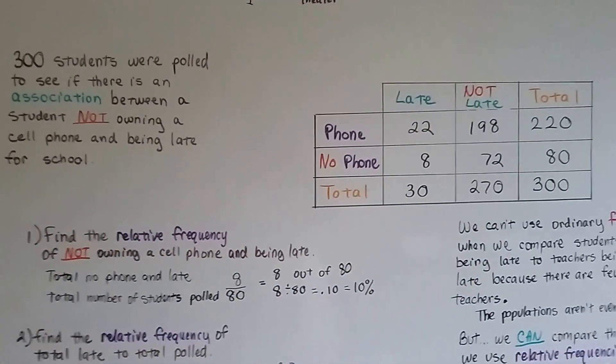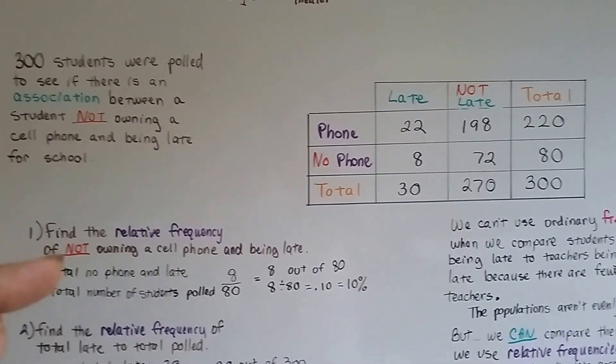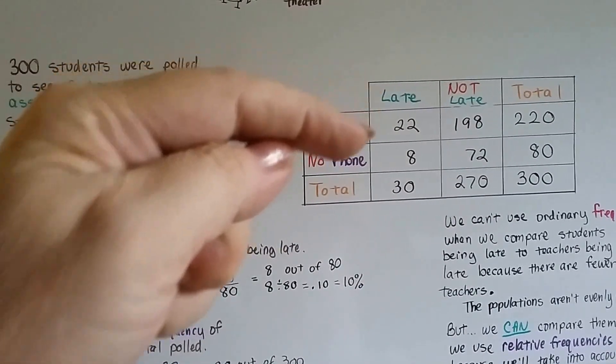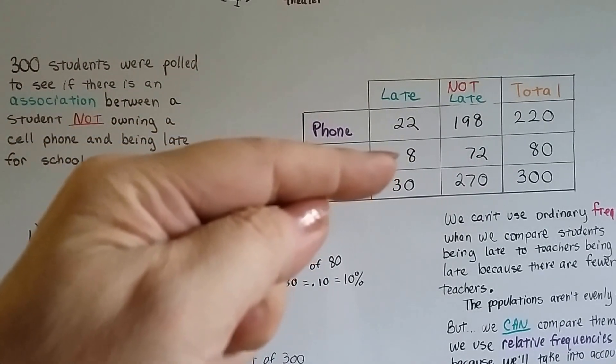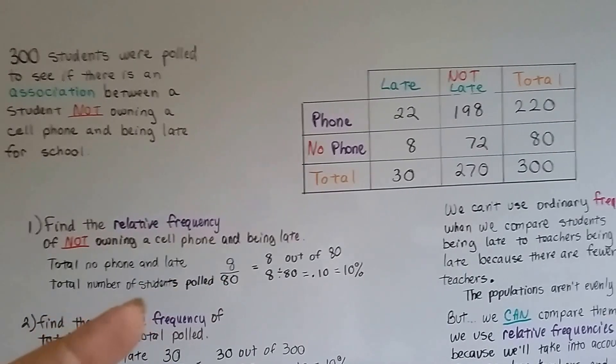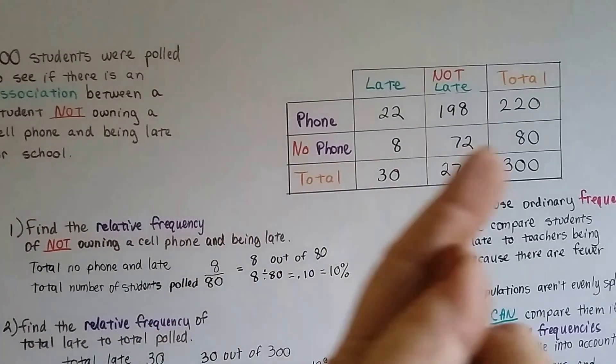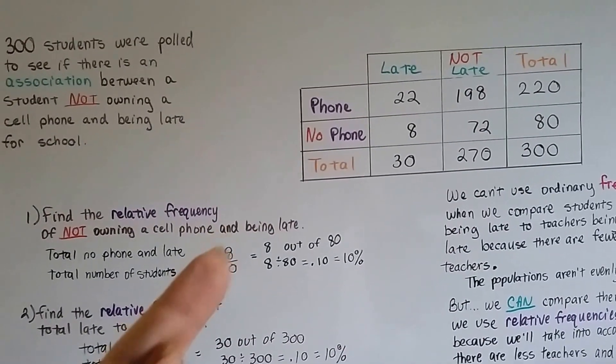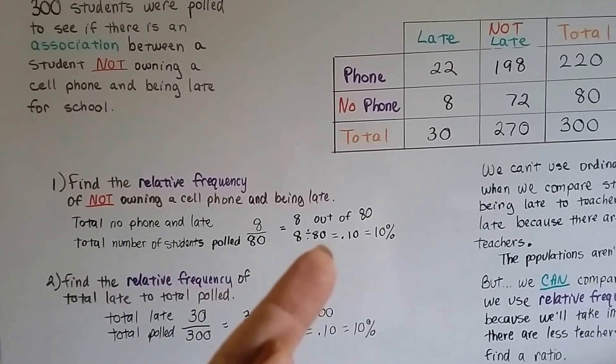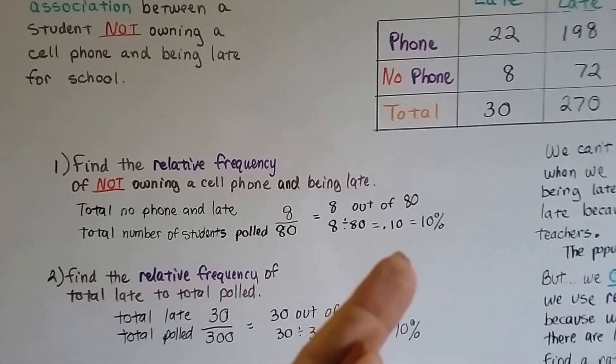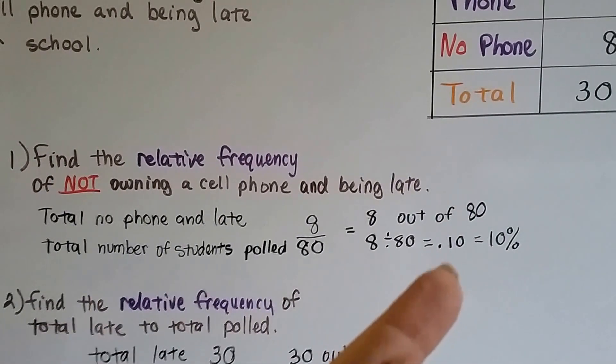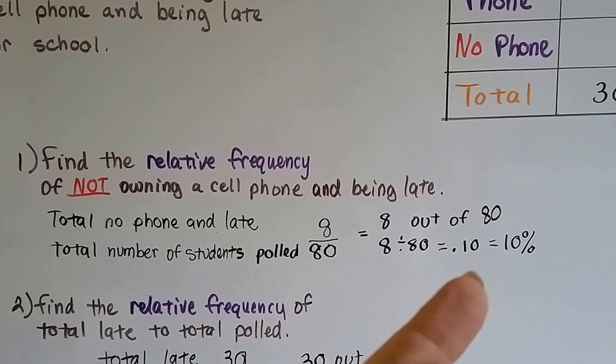The first thing we're going to do is find the relative frequency of not owning a cell phone and being late. Here's late and here's no phone. That's eight. The total of no phone and late is eight. And the total number of students polled with no phone was 80. So, we have eight out of 80. And if you remember from the last video, what we do is eight divided by 80. That gives us .10 or 10%. So, 10% of the students without a cell phone were late.